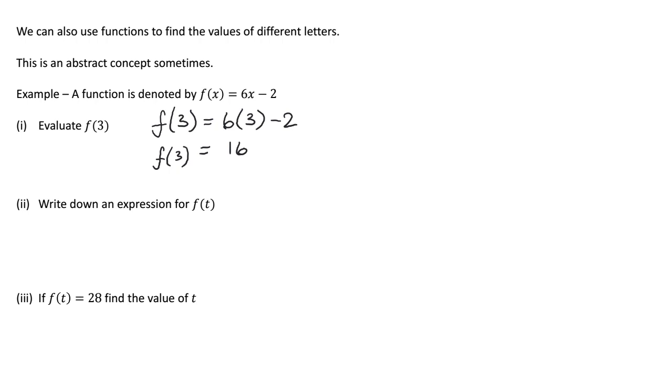Part 2 says write down an expression for f(t). I'm not going to change anything about what I do here, because we've said in the past a letter, it's just a number we don't know yet. With the previous part, we had to find out f of 3. So we replaced the x with a 3. For this part, I've defined f of t. So all I'm going to do here is replace the x with a t. So my expression for f(t) is 6t subtract 2.